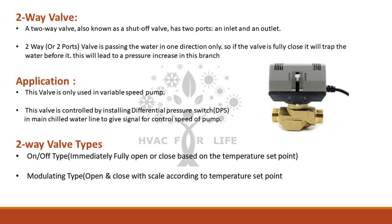Application: this valve is only used with a variable speed pump. It is controlled by installing a differential pressure switch (DPS) in the main chilled water line to give a signal for controlling the speed of the pump. Two-way valve types include the on-off type, which immediately fully opens or closes based on the temperature set point, and the modulating type, which opens and closes in scale according to the temperature set point.